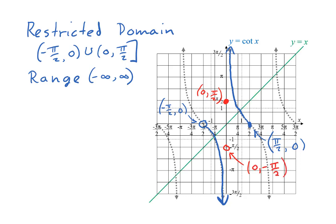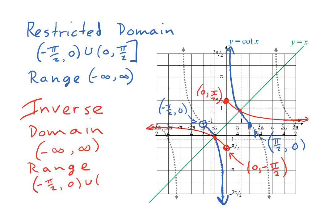Next, we consider the y equals x line. Wherever the function crosses the y equals x line, it shares that point with its inverse. This happens in two places on our graph. The y-axis is an asymptote of cotangent, which means the x-axis is an asymptote of the inverse. Where x is positive and close to zero, the y value of cotangent approaches positive infinity, so where y is positive and close to zero, the x value of the inverse approaches positive infinity. Similarly, where x is negative and close to zero, the y value approaches negative infinity, so the inverse approaches negative infinity. We use this to sketch the inverse function, which is a reflection across the y equals x line. This inverse has a domain of negative infinity to positive infinity, and a discontinuous range of negative pi over 2 to zero and zero to positive pi over 2. The inverse function can be written cotangent inverse x, or arc cotangent x.